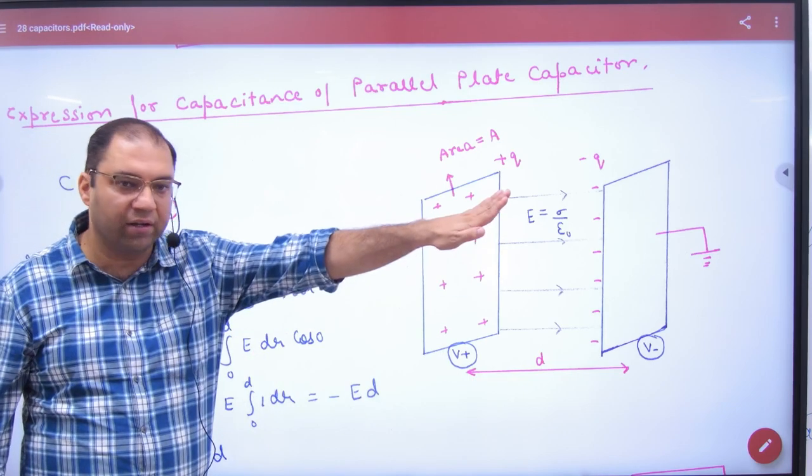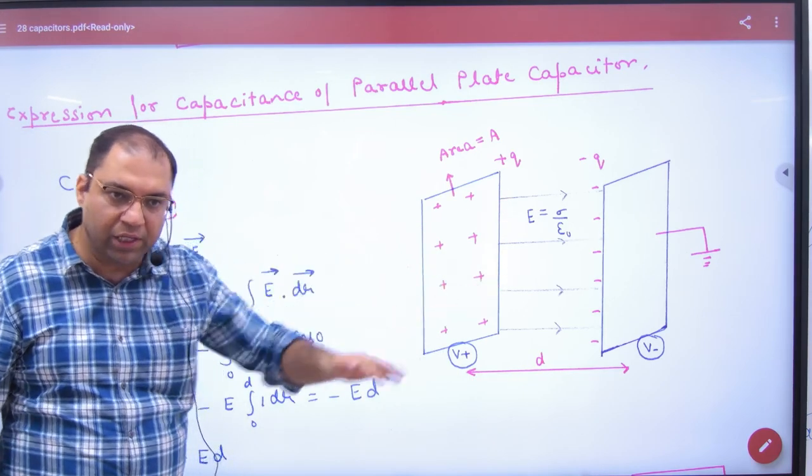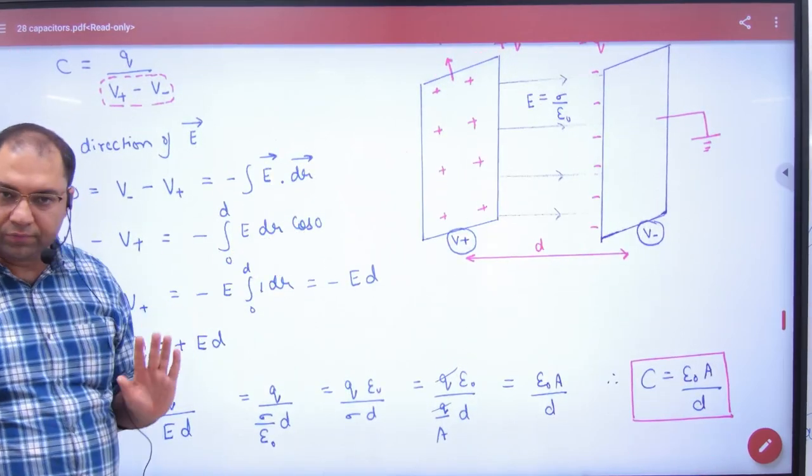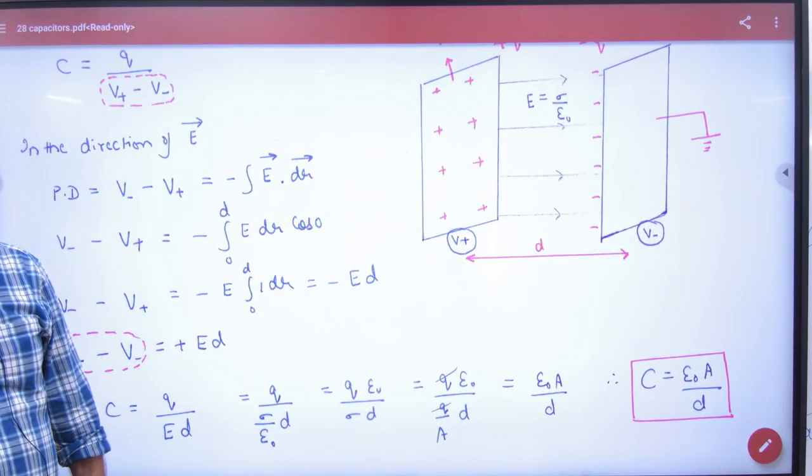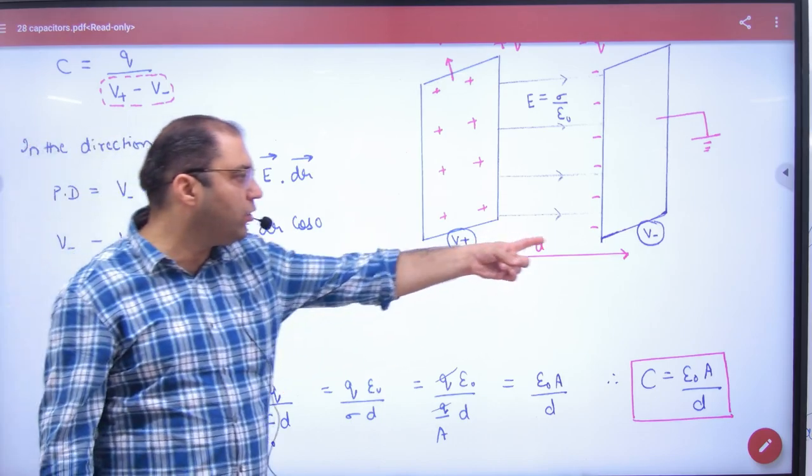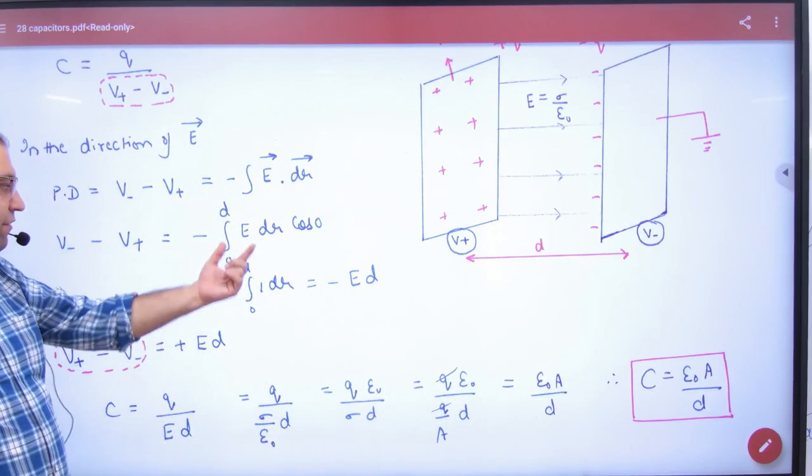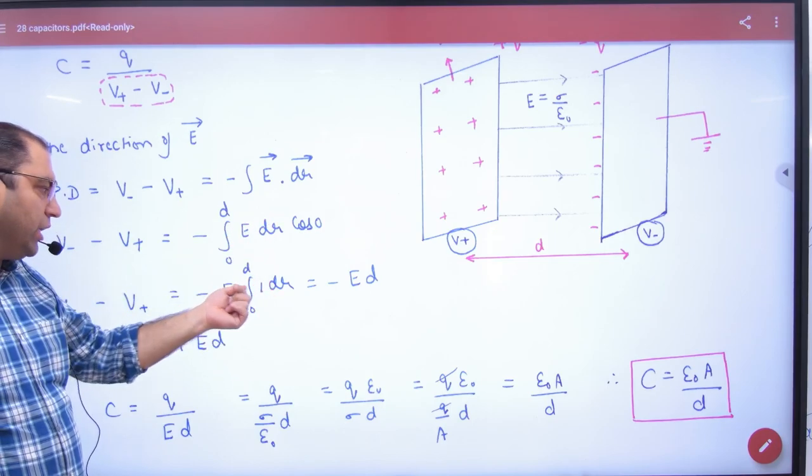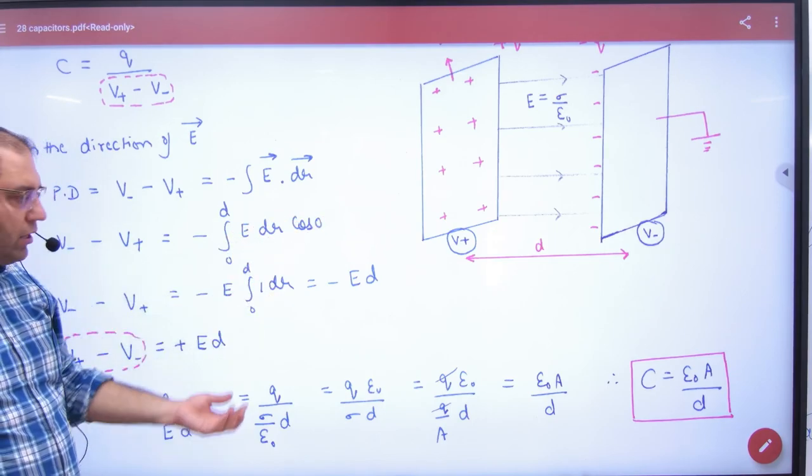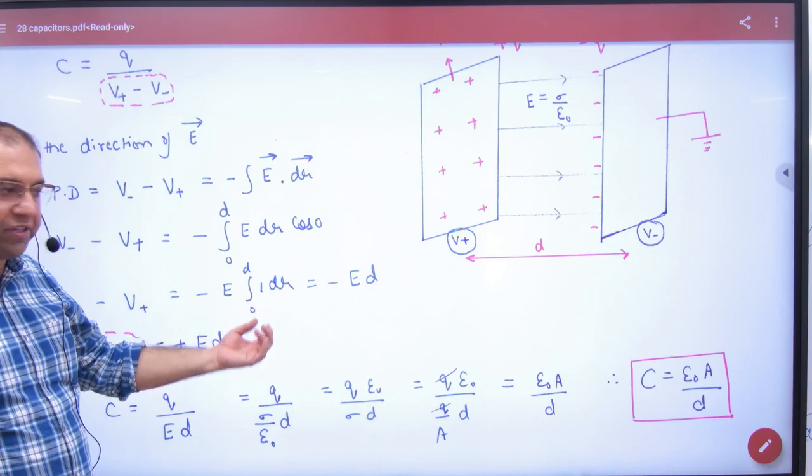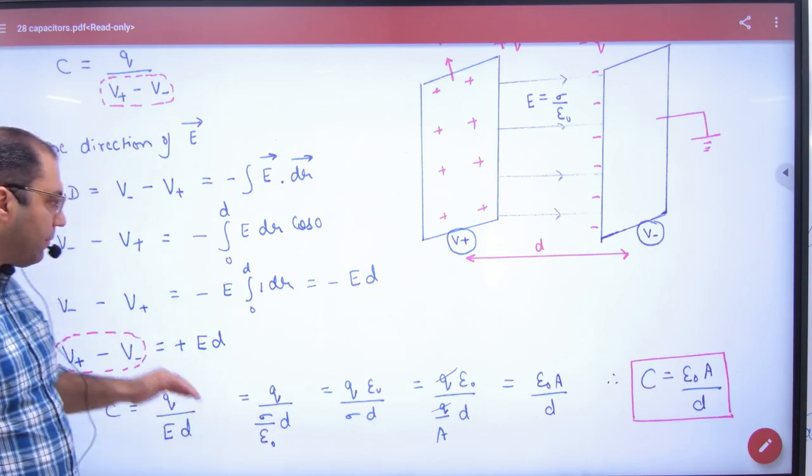So E is in the right direction. You are going right. E and dr angle will be 0°. So the limit is 0 to D. Potential difference is ∫E dr from 0 to D. E is constant in the plates, so integration of dr from 0 to D is D.